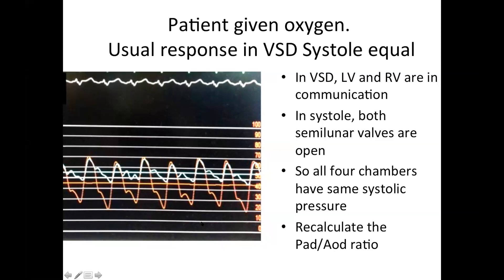The earliest sign you get the moment you start the vasodilator — either oxygen or nitric oxide — is the fall in the PA diastolic pressure in relation to aortic diastolic pressure.